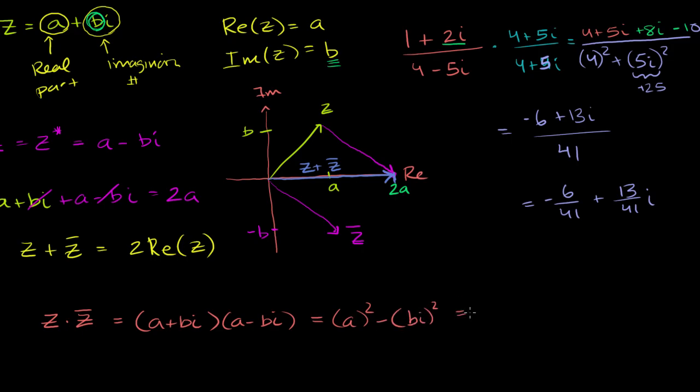I'm going to get a real number. It's going to be a squared minus bi squared, difference of squares, which is equal to a squared. Now this is going to be negative b squared, but we have a negative sign out here. So they cancel out, a squared plus b squared. And just out of curiosity, this is the same thing as the magnitude of our complex number squared.